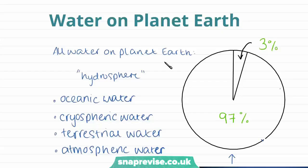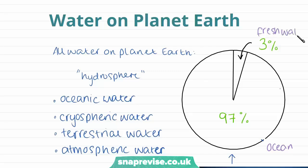First of all, we're going to understand where water is stored on planet Earth. All water on planet Earth is described as being part of the hydrosphere, and the hydrosphere is 97% in the ocean, and 3% of it is locked up in fresh water. The oceans account for the largest part of the Earth's water. The hydrosphere can be divided up into four different groups: oceanic water, cryospheric, terrestrial, and atmospheric water. We're going to go into detail on each of these different stores of water on Earth, and they all make up the hydrosphere.